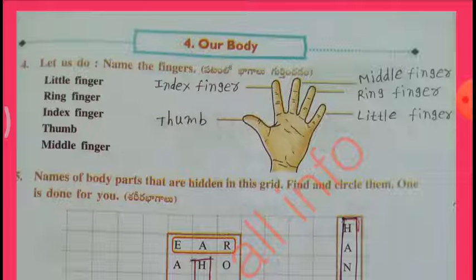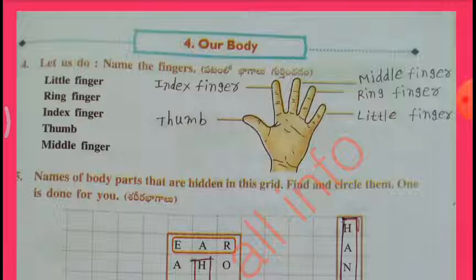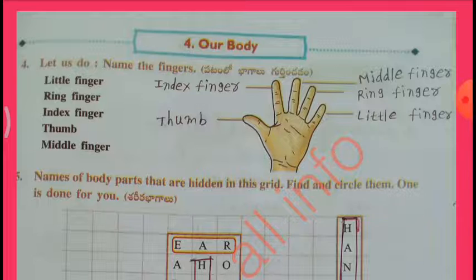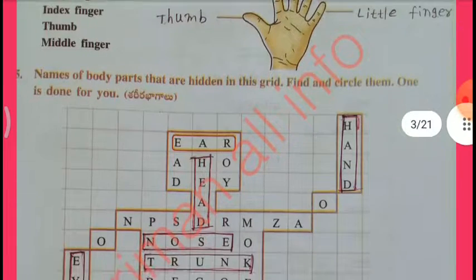Let us do: Name of the fingers — Thumb, Index Finger, Middle Finger, Ring Finger, Little Finger. Names of body parts are hidden in this grid. Find and circle them. One is done for you.